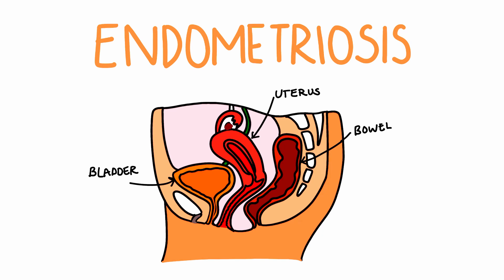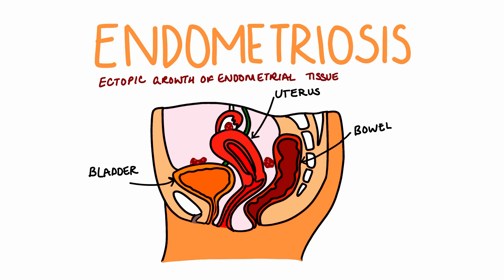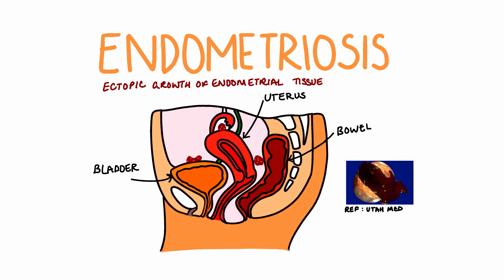So what is it? Endometriosis is a condition where there is endometrial tissue outside the uterus, otherwise known as ectopic endometrial tissue. When this occurs, the collection of tissue is known as an endometrioma. Although endometriosis can occur anywhere in the body, most commonly it's present in the ovaries, where it can show up as a chocolate cyst appearance.